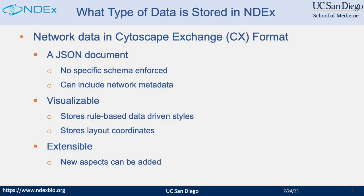How do we store networks in NDEX? Each network is stored as a text file in a special format we called CX. It is a format we developed together with the Cytoscape team. One big advantage of this format is that it makes a network interoperable in the Cytoscape ecosystem. CX follows the JSON specification, which means it can be easily read or written by many programming languages.